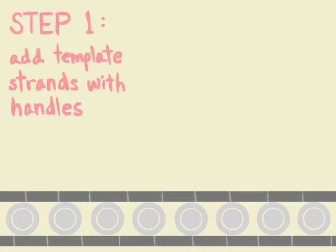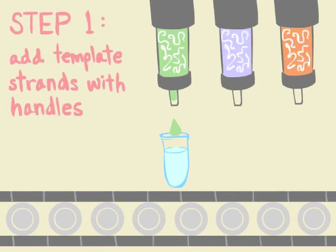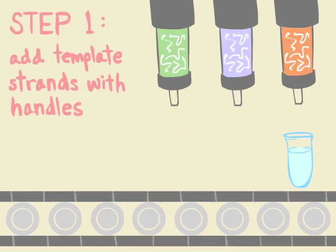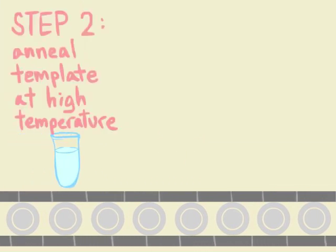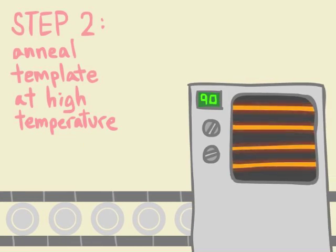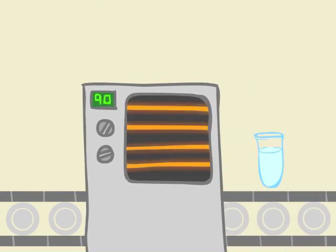To start, we mixed our design strands inside a test tube to form the template. Certain strands have special handles sticking out, just an extra piece of DNA that helps grab the second layer. To form our structure, we heat up our mixture in a process called annealing. We gradually lower the temperature from 90 degrees so that the strands can settle into the correct positions.